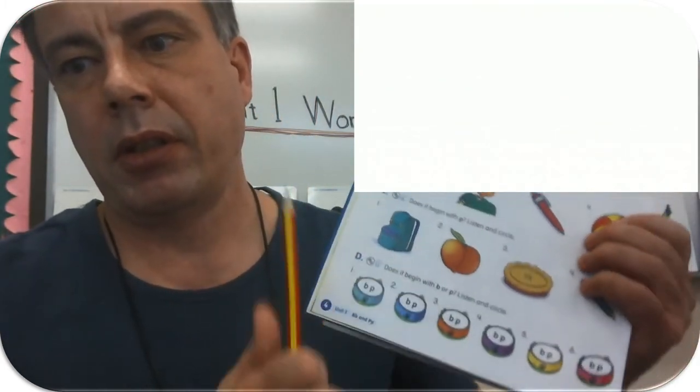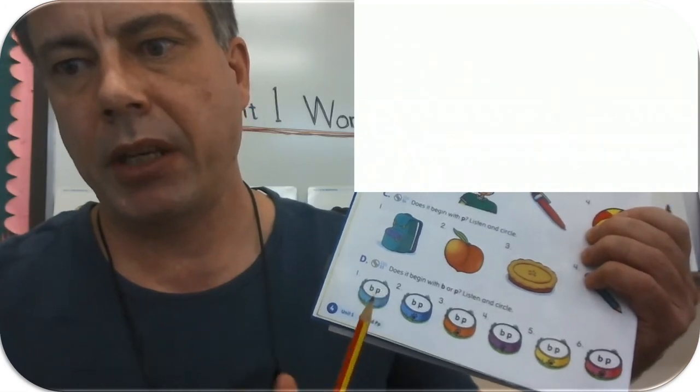Okay, did you circle the B or P on page four? We will correct the exercise after a game. The game is easy. I will show you a picture and I want you to say the word before the text comes up. So you have to say the word before the text shows. Let's try.